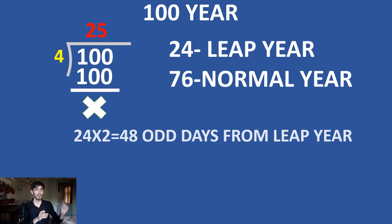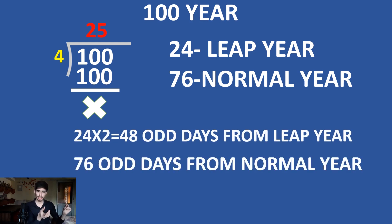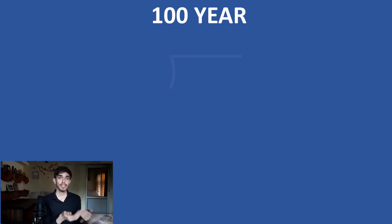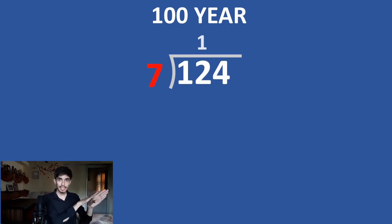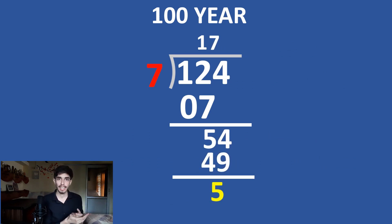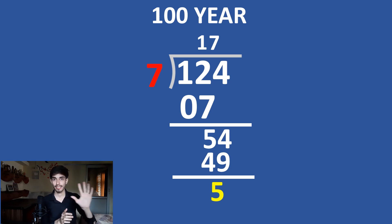From that, we have 48 odd days from leap years (24 × 2) and 76 odd days from normal years. Adding these gives 124. The odd day number should be 0 to 6, so divide by 7. We get a remainder of 5. So whenever 100 years pass, we get a lag of 5 odd days.